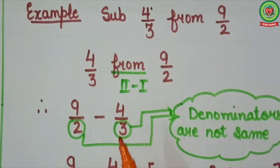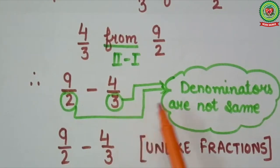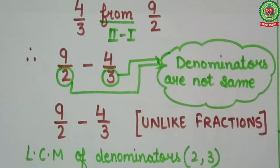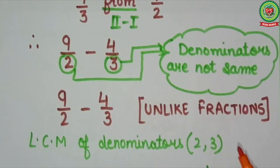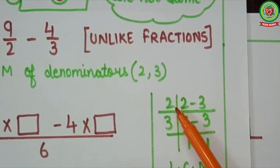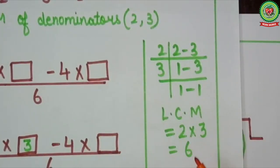Now step 1: check the denominators. Here denominators are not same, so these are unlike fractions. Step 2: find LCM of denominators. Here denominators are 2 and 3. By antenna method, first it will go on table of 2, then on table of 3. LCM is 2 into 3, that is 6.